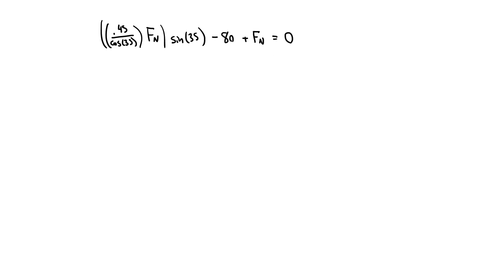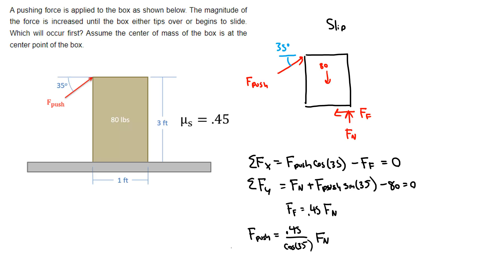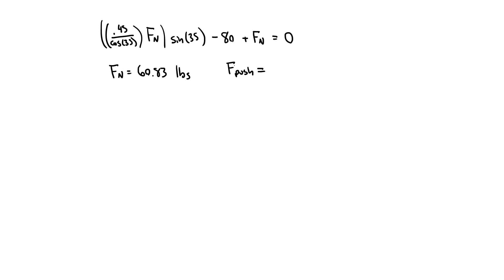If I solve for Fn at this point, I'd wind up with Fn equals 60.83 pounds, and F_push, which is going to be equal to this here, so 0.45 over cosine 35 times our Fn value.